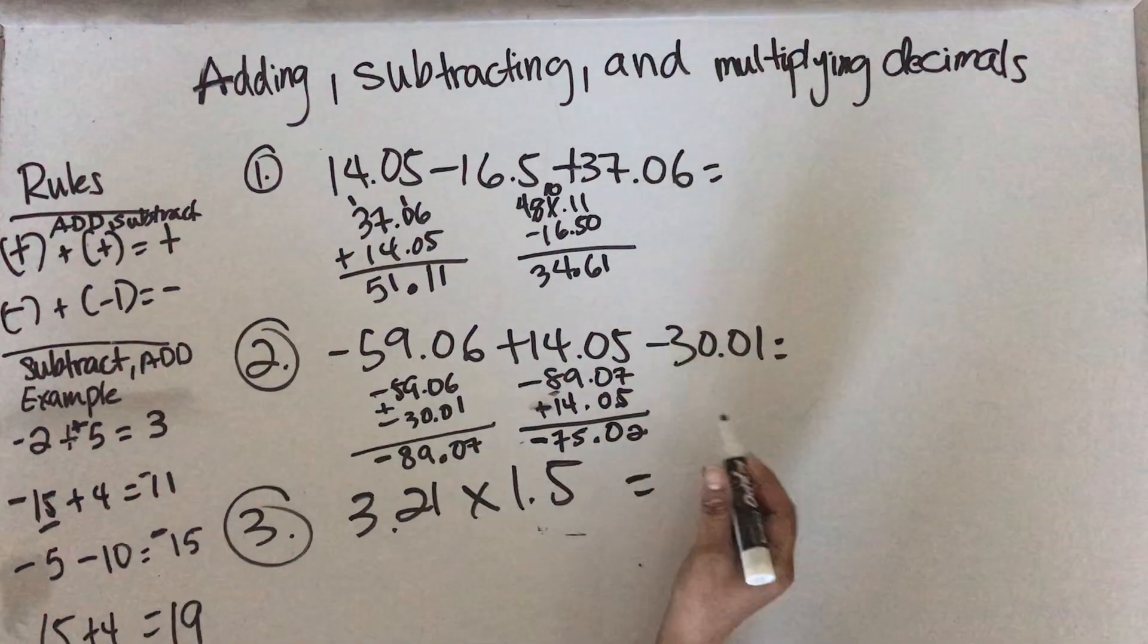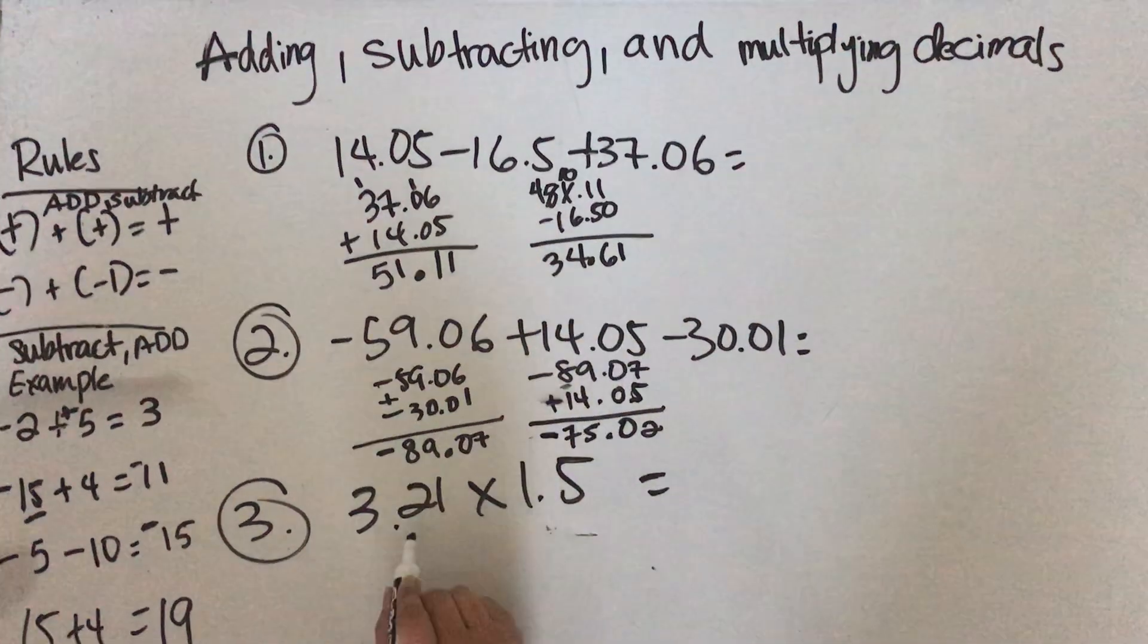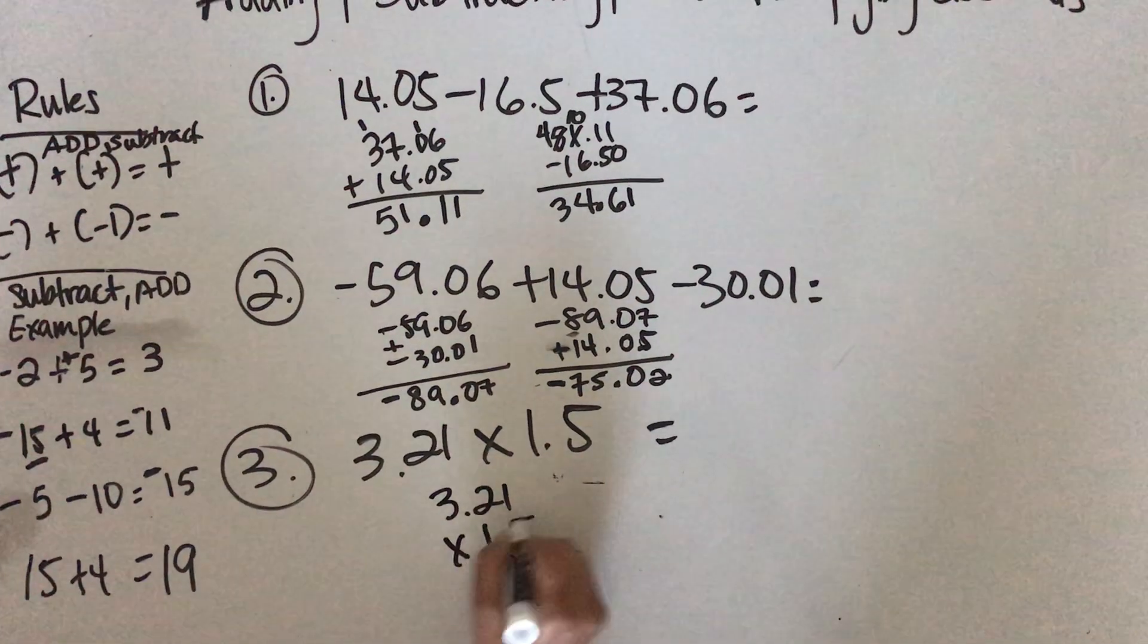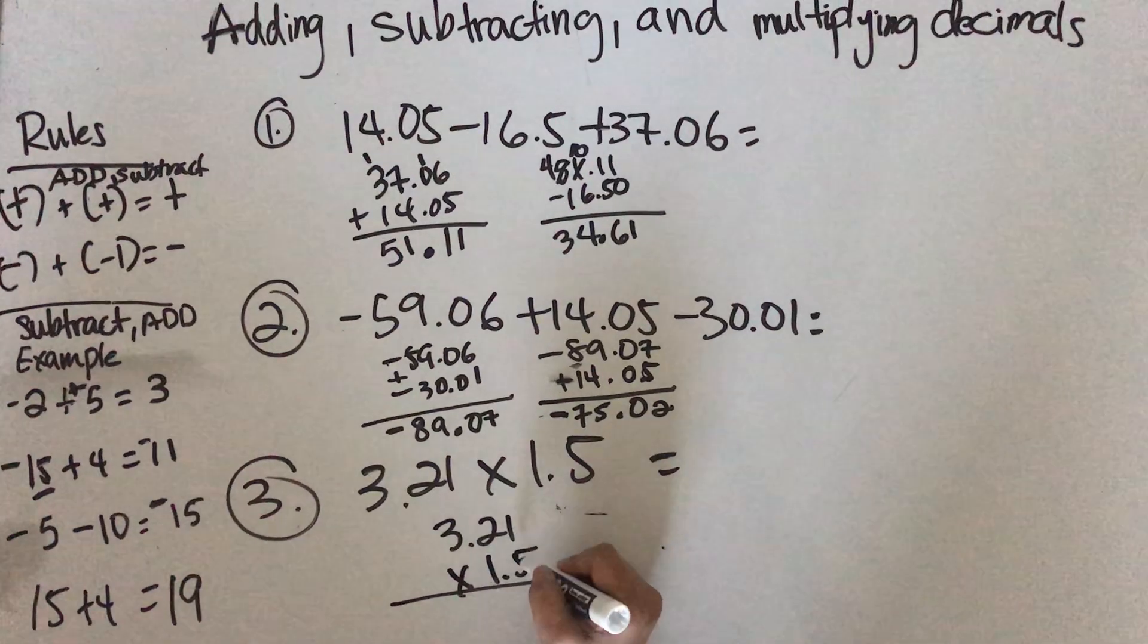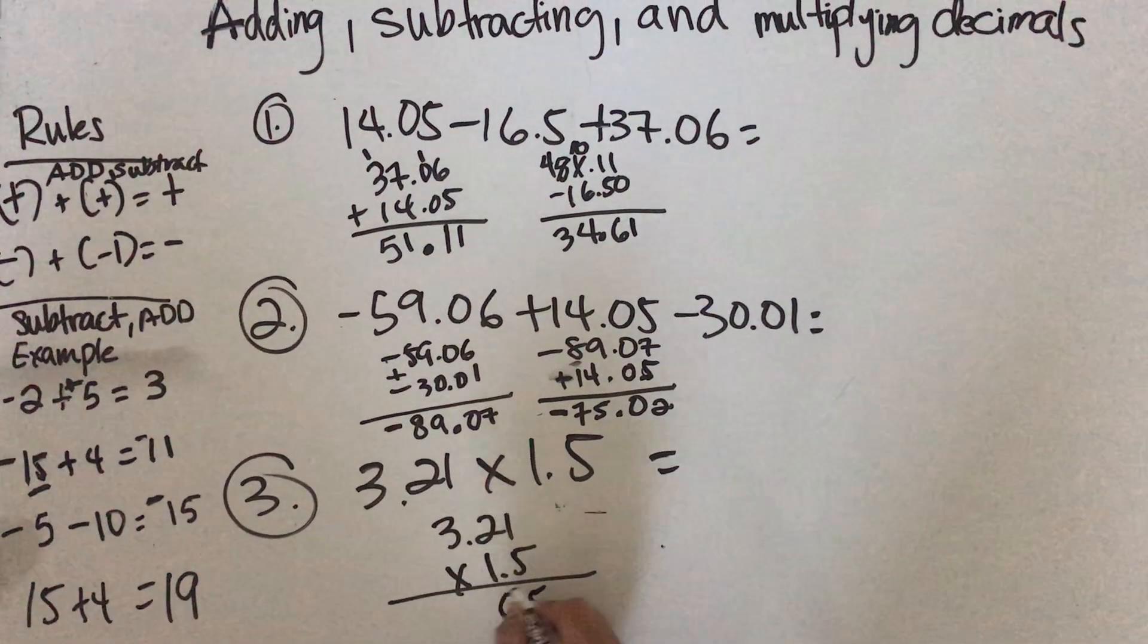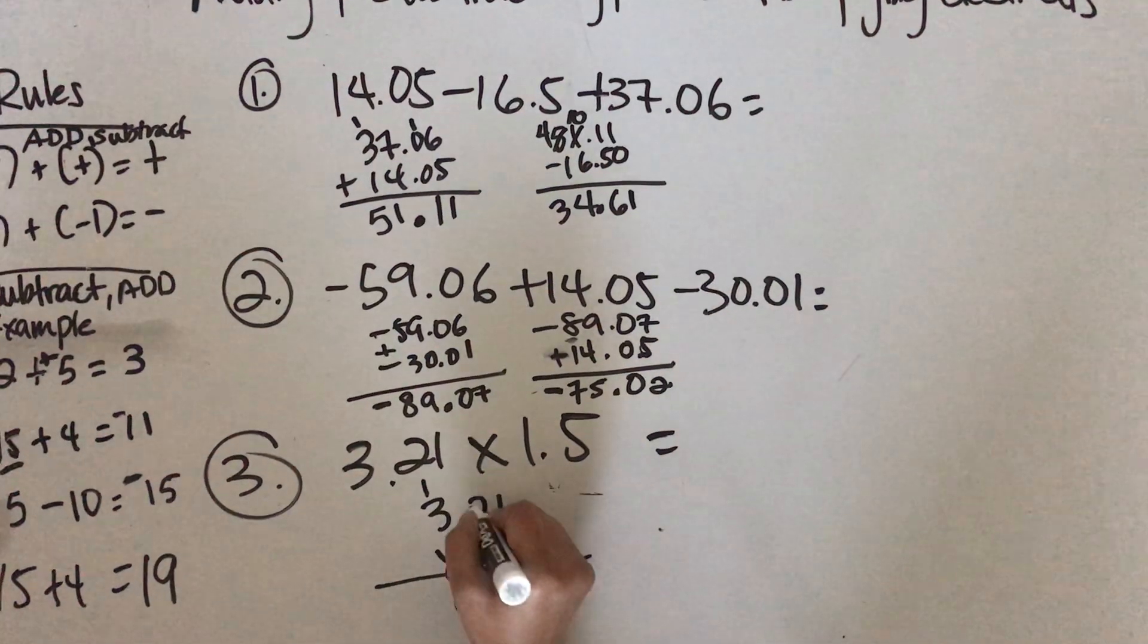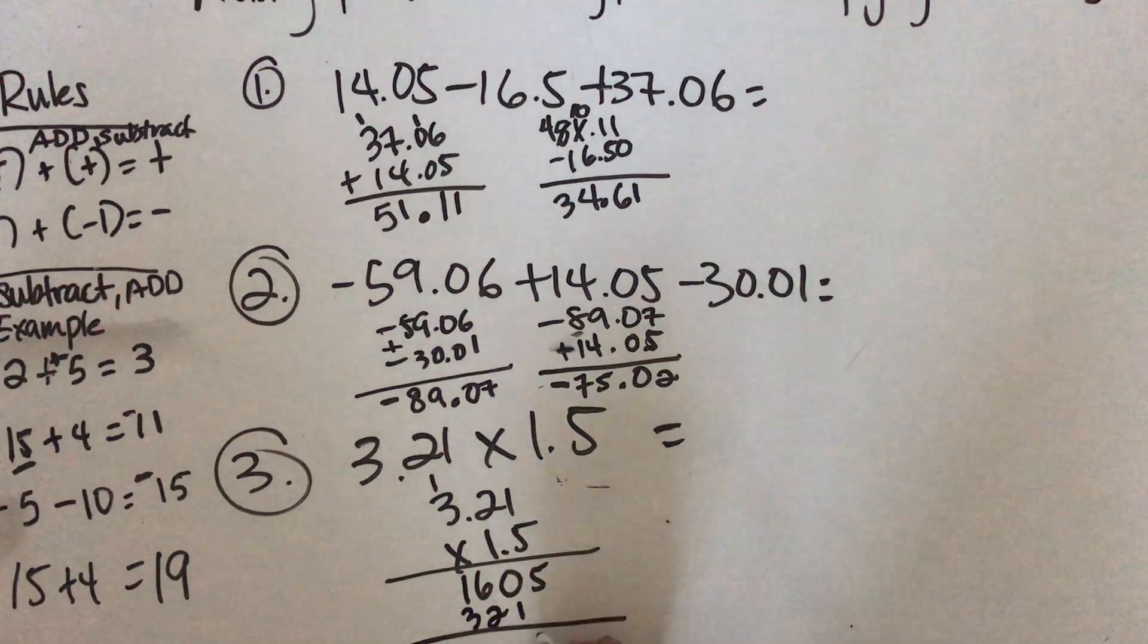With multiplication it's a little bit different. You multiply and figure out how many decimal points you need. 5 times 1 is 5, 5 times 2 is 10, carry 1. 5 times 3 is 15 plus 1 is 16. Then 1 times 1 is 1, 2 times 1 is 2, 3 times 1 is 3.